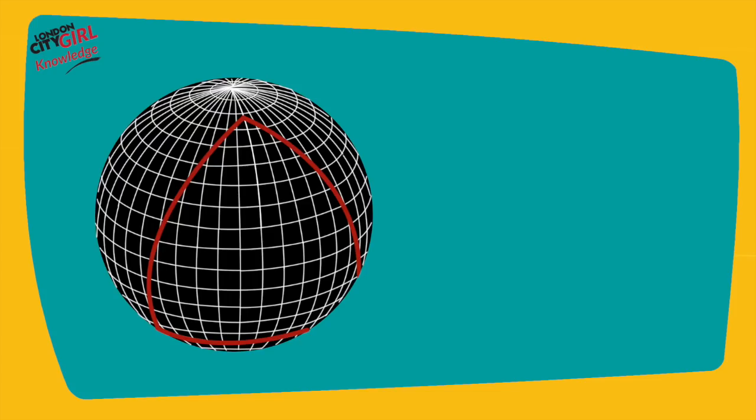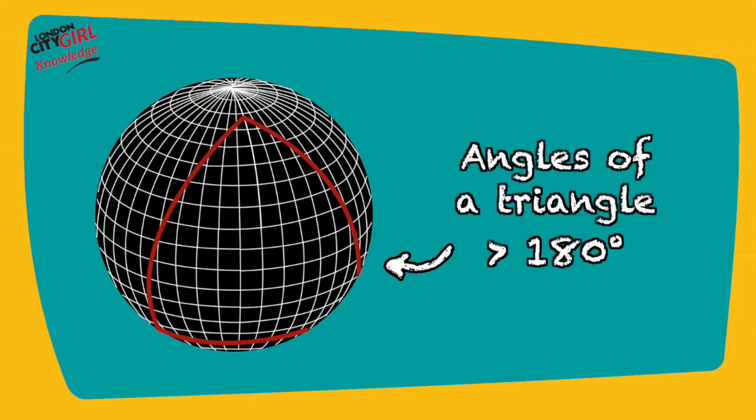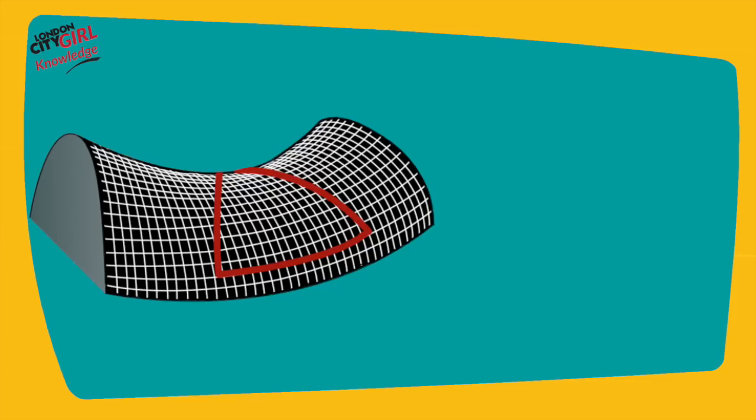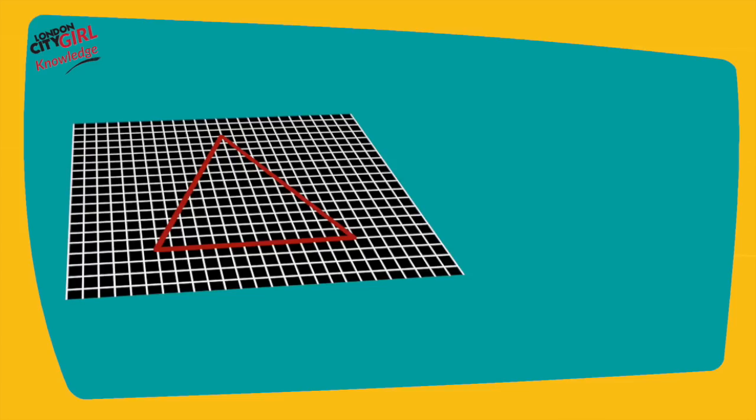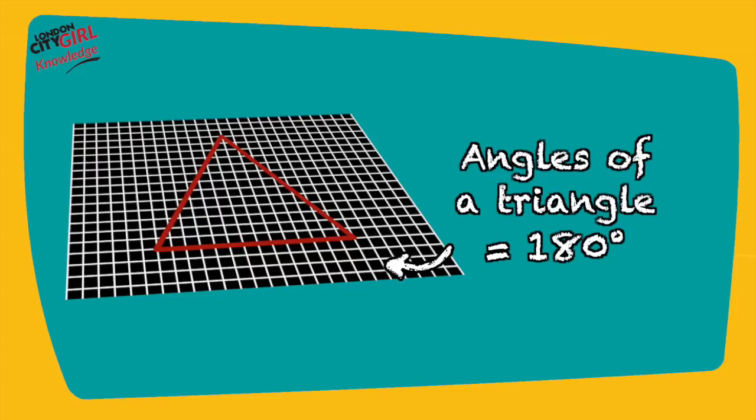In a closed universe, the angles of a triangle would be more than 180 degrees. In the open saddle-shaped universe, the angles of a triangle would add up to less than 180 degrees. And in the flat universe, as mentioned, the angles of a triangle would add up to exactly 180 degrees.